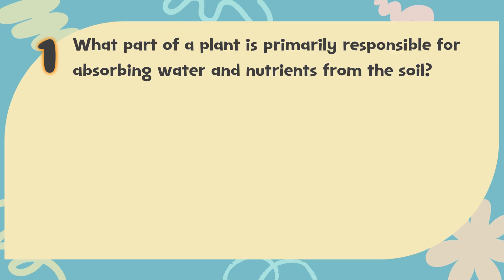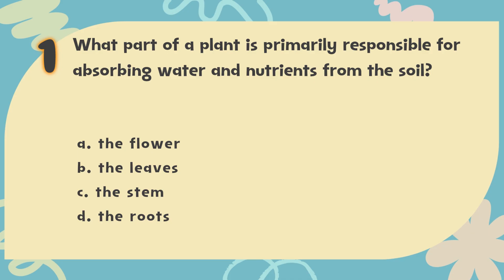Number 1: What part of a plant is primarily responsible for absorbing water and nutrients from the soil? The choices are: A. The flower, B. The leaves, C. The stem, D. The roots.